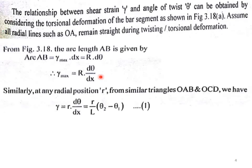Similarly, at any radial position r from the two similar triangles from the figure, that is OAD and OCD, are the two similar triangles. We have gamma is equal to r into d theta by dx, which is equal to r by L into theta 2 minus theta 1. Equation number 1.